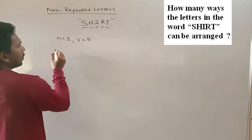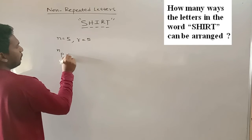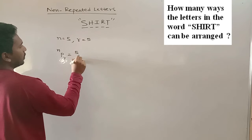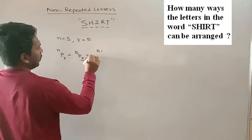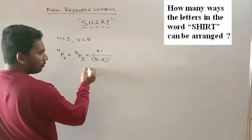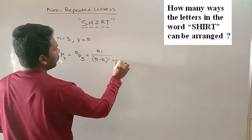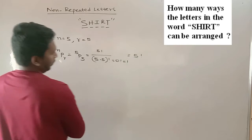So as per our formula NPR, it is equals to 5P5. So that means 5 factorial by 5 minus 5 factorial. Anyhow, 5 minus 5 factorial is 0 factorial and that is equals to 1. And this equals to 5 factorial.